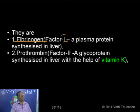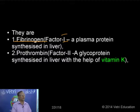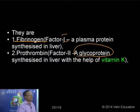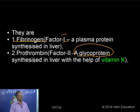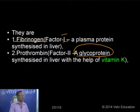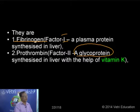The second important factor is prothrombin, factor number 2. It is a glycoprotein, a conjugated protein. Most of the clotting factors are proteins. Fibrinogen is a fibrous plasma protein produced in the liver. Likewise, prothrombin is a glycoprotein also synthesized in the liver, with the help of vitamin K.